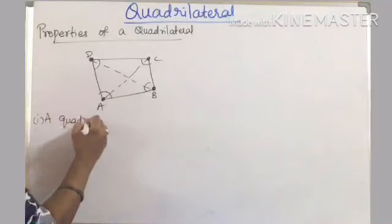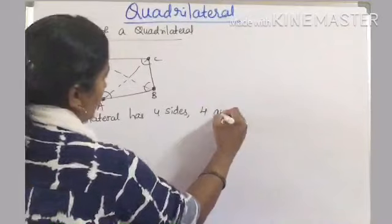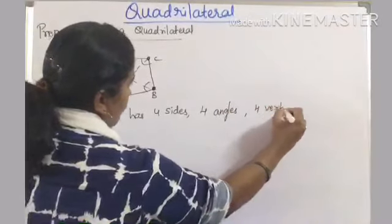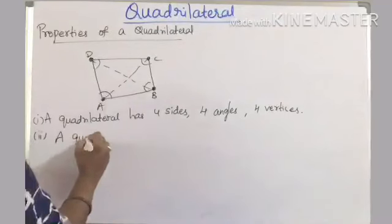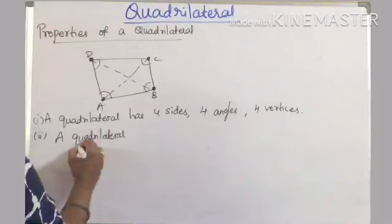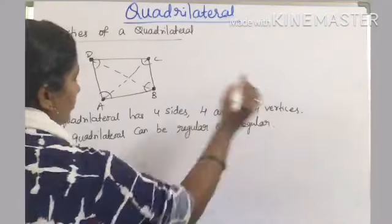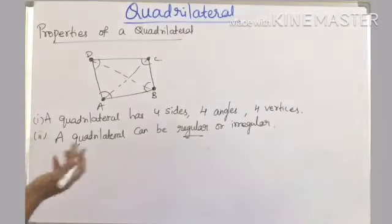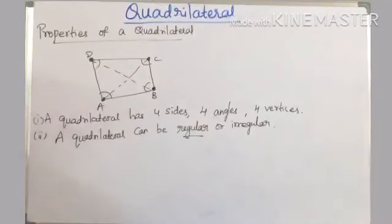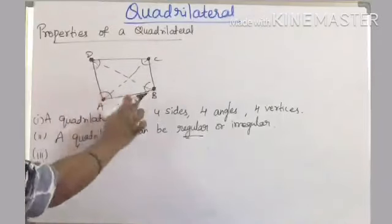The second property is: a quadrilateral can be regular or irregular. Regular means a figure in which all sides are equal and all angles are equal — same shape, equal size, and equal angles. Irregular means having different measurements.